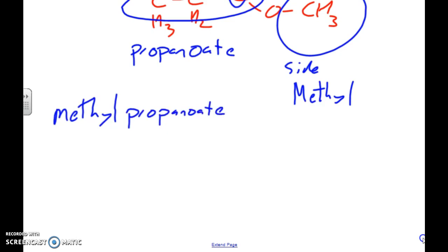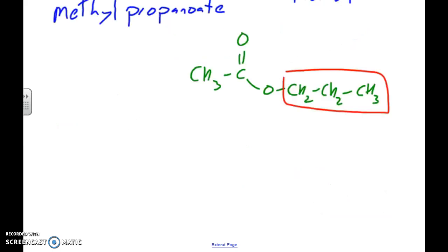One more example: if we've got CH3 here, what's our side chain? Our side chain is this piece right here. You're probably thinking, but that's the longest carbon chain. Doesn't matter. By definition, our main chain is the piece attached to the double bonded oxygen. So this is ethanoate.